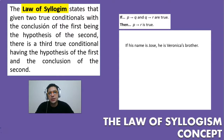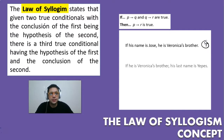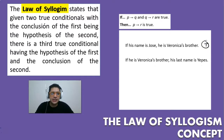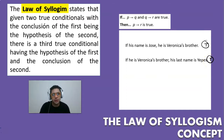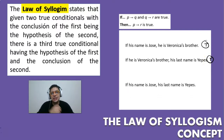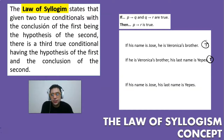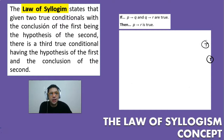Let's take a look at some examples. The first one: if his name is Jose, he is Veronica's brother — assume that is true. If he's Veronica's brother, his last name is Jeppes — assume that is true. So if his name is Jose, his last name is going to be Jeppes. We jump straight away because the conclusion of the first is the hypothesis of the second — they cancel each other out.